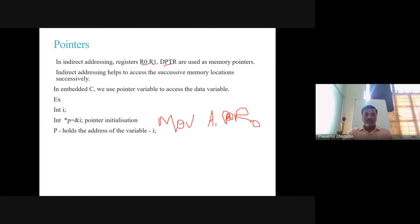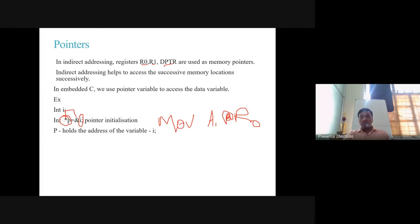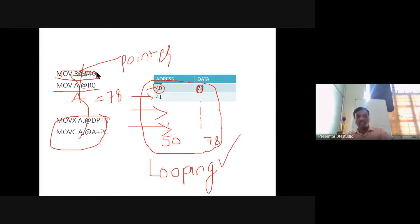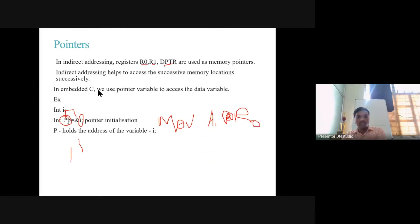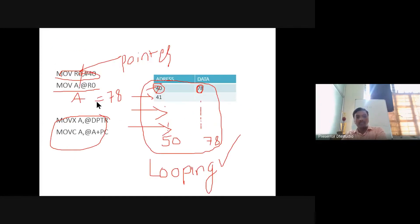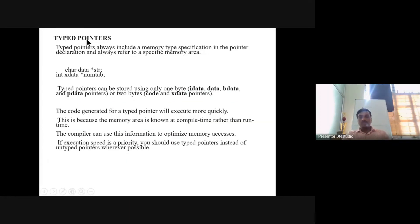In embedded C, we use pointer variables to access data variables. For example: int *p = &i. Here p is the pointer variable and i is the variable. The variable p holds the address of variable i. This is similar to MOV R0, 40h in assembly, where R0 holds the address of a memory location and p holds the address of variable i. In pointers, we have two types: typed pointers and untyped pointers.